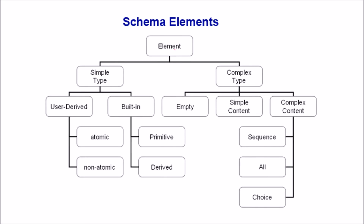The schema element has elements with simple type or complex type. For simple type, it may be user-defined — atomic or non-atomic — or built-in, which can be primitive and derived. For complex type, it can be empty, simple content, or complex content. In complex content, you have sequence, all, or choice.